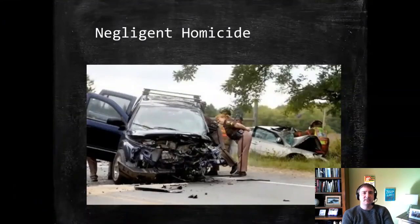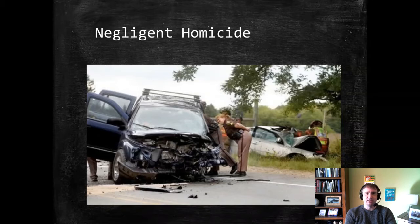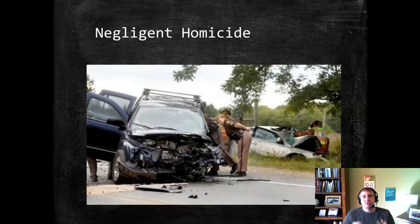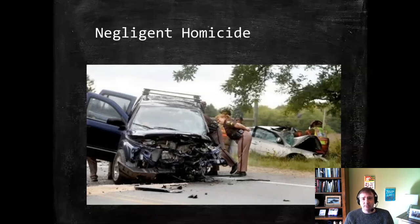Today we move on to the last level of homicide: negligent homicide. Some jurisdictions throw this into the manslaughter category as a lesser form of manslaughter, but we're going to keep it separate. We'll use the label negligent homicide to describe instances in both the common law and the Model Penal Code when a defendant causes the death of another and the applicable mens rea is negligence — meaning they took a substantial and unjustified risk they should have been aware of and grossly deviated from the conduct of a reasonable person.